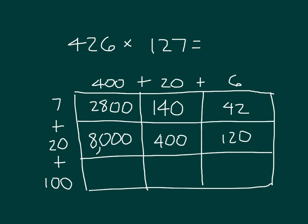100 times 400, 4 times 1, which is 4, followed by 1, 2, 3, 4 zeros. So 100 times 400 is 40,000. 100 times 20, that's 20 hundreds, or 2,000. And 100 times 6, that's 6 hundreds.